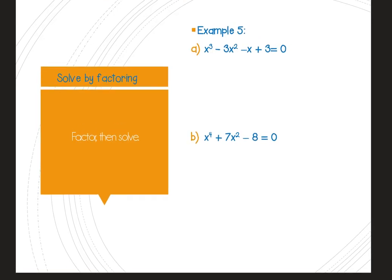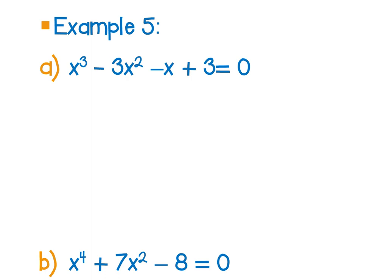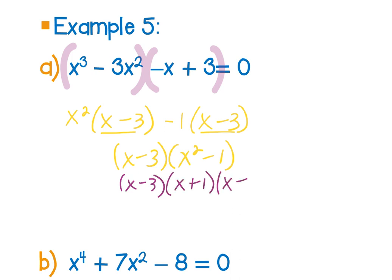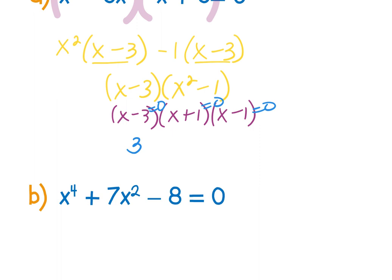Factoring and solving — something we've done many times this year. In this section you could have many kinds of factoring: trinomials, perfect square trinomials, four terms requiring grouping, difference of two squares. For example (a): factor out x², getting x²(x − 3); factor out negative 1 from the remaining terms to get −1(x − 3); the (x − 3) factors match, so group what's left to get (x² − 1)(x − 3). Then factor x² − 1 as (x + 1)(x − 1) — difference of two squares — set each factor to zero: x = 3, −1, 1.